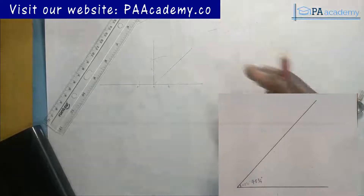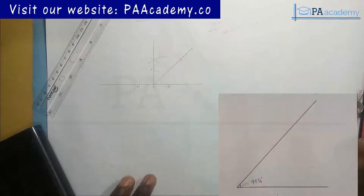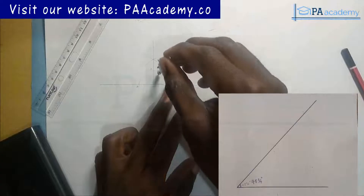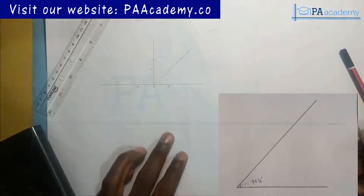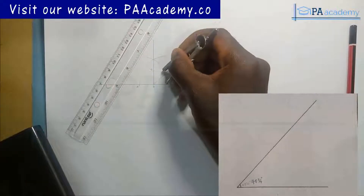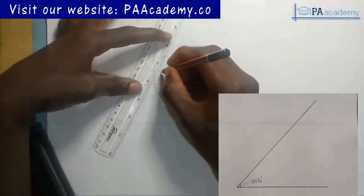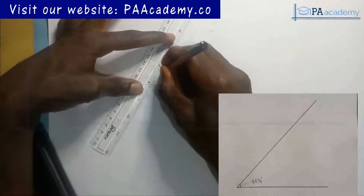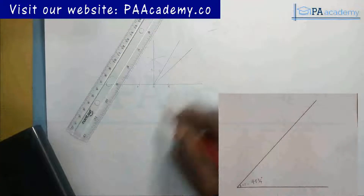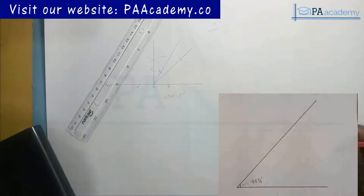Now let's also construct angle 60 degrees in the first quadrant. I bring back my compass with the same length used to draw the semicircle, and from point B I draw an arc to touch the semicircle. I call that intersection point D, then draw a line from D to point O. This gives us angle DOB equal to 60 degrees, and we already have our 45° line.